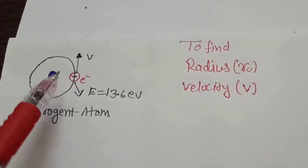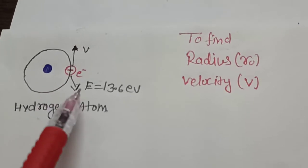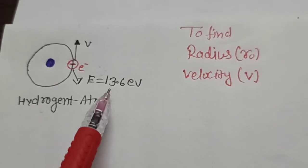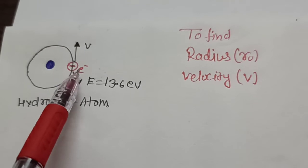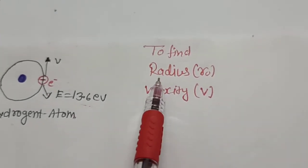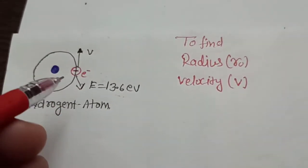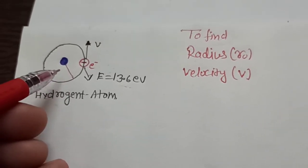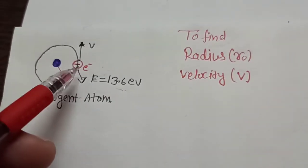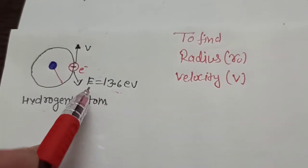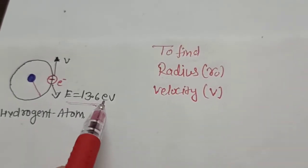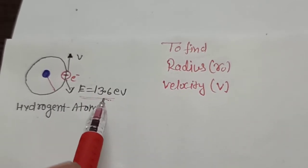In this problem we have a hydrogen atom. This is the first orbit of the hydrogen atom and the energy level of the first orbit is -13.6 electron volts. The electron is revolving around this orbit. We have to calculate, with respect to this energy, the radius and the velocity. The radius is already known to be 0.53 Angstroms, but we have to find the same value using the given energy.